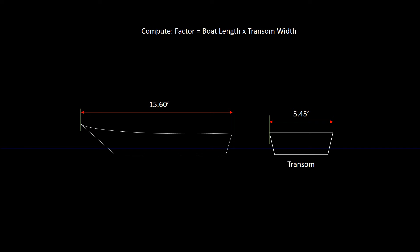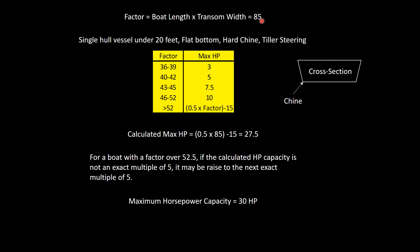Now, the Coast Guard wants you to compute a factor. And the factor is simply that boat length in feet times the transom width in feet. So we would take the factor and compute it as 15.6 feet boat length times 5.45 feet transom width. And it gives us a nice round factor of 85. So what do we do with this factor once we compute it? Let me show you.